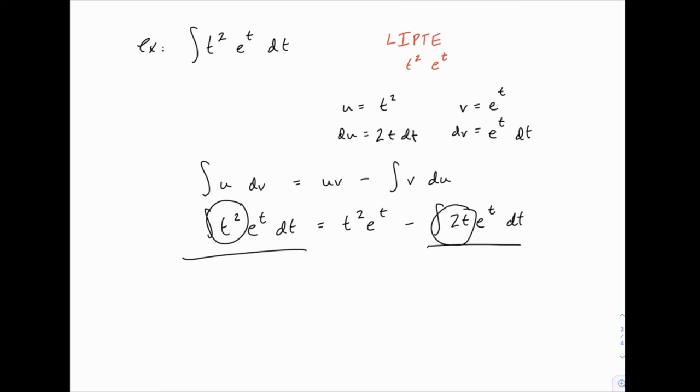And if you project forward and you kind of think about what's going to happen, it may be clear to you that when we do this again with the same setup, we're going to drop off that t because we'll take the derivative of that piece. And so then we'll finally have one that we know the answer for immediately.